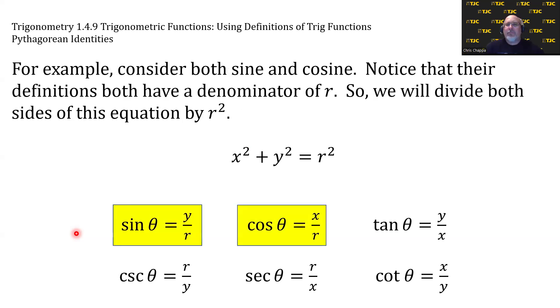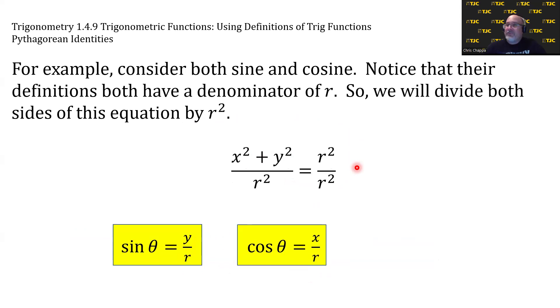For example, consider both sine and cosine. Notice that their definitions both have a denominator of r. So we will divide both sides of this equation by r². That will set up some fractions whose denominator has an r. So let's divide both sides by r². And let's go through what would happen.